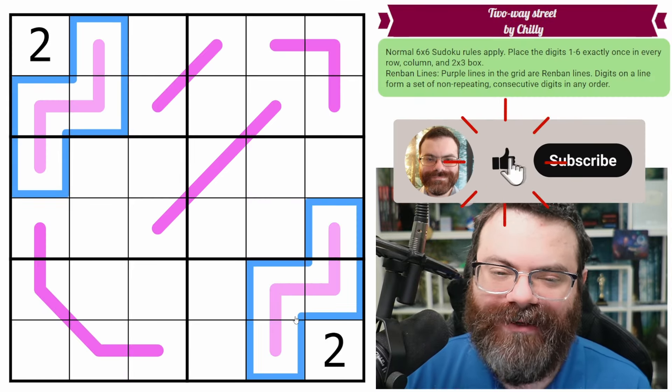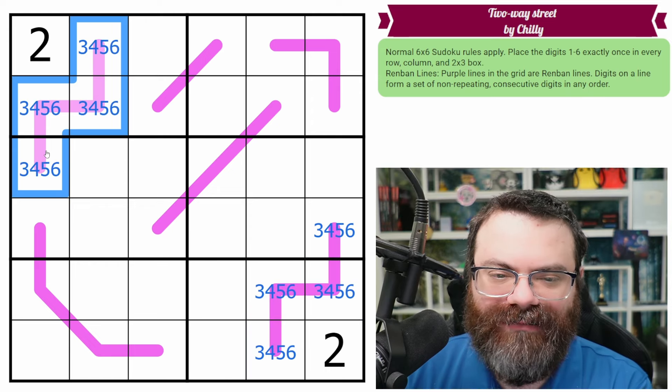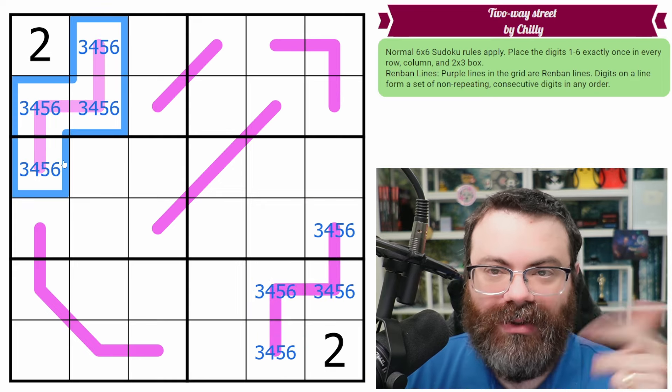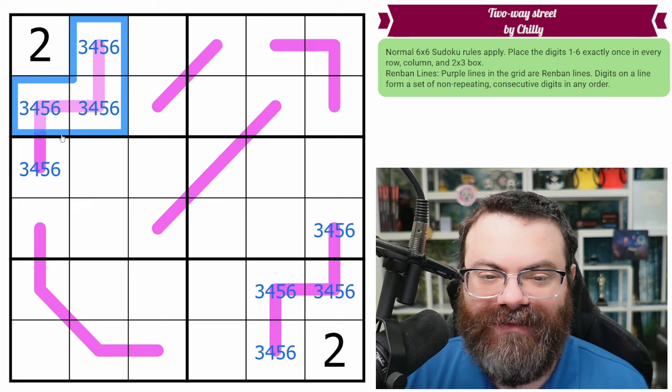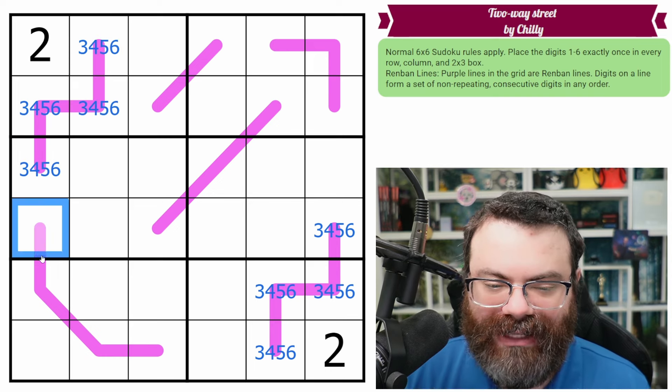Well, as you may have figured out from my example, these actually have to be 3, 4, 5, 6, because all of these cells see a 2. And that's the same down here. And so if we're missing the 2, we're also missing the 1, and there's only 4 digits left to put on the Renban. So that's what we do.